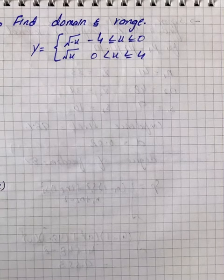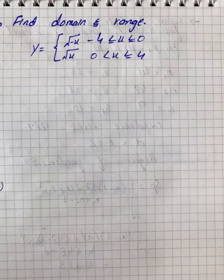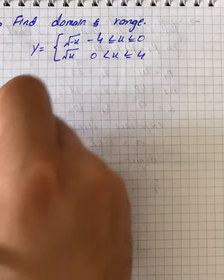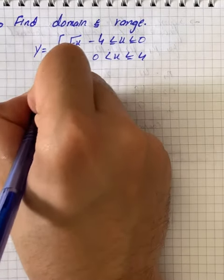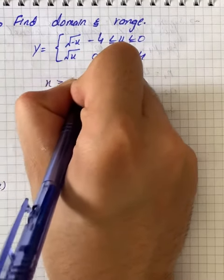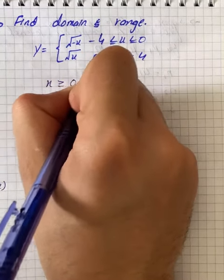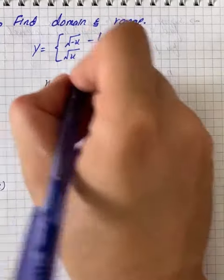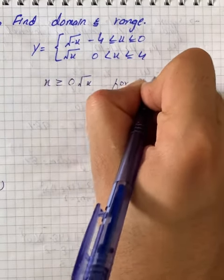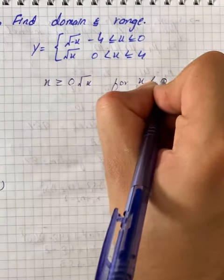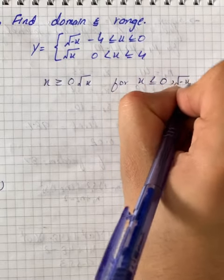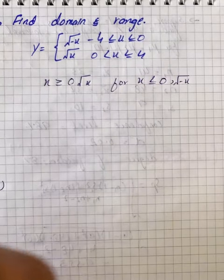Here we have a question where we have to find the domain and range. For x, under root x is real for x greater than or equal to 0, and under root minus x is real for x less than or equal to 0.